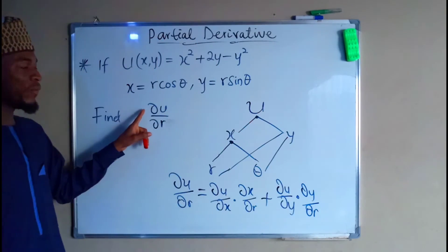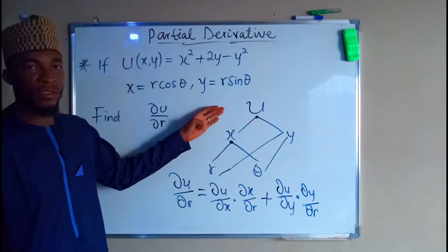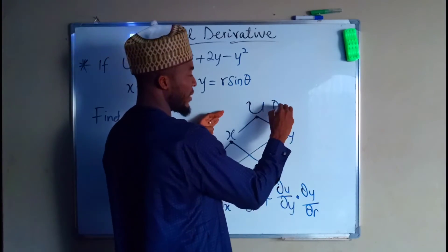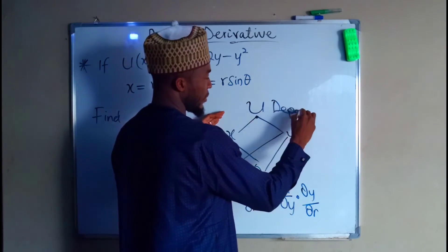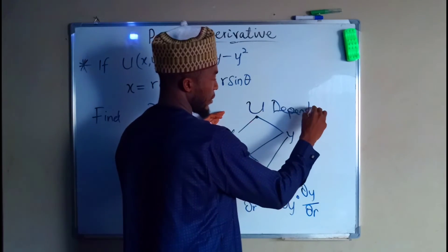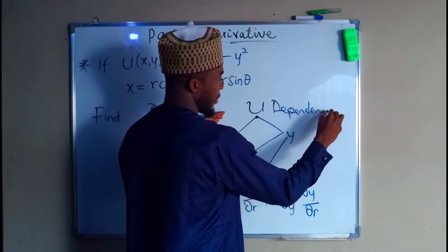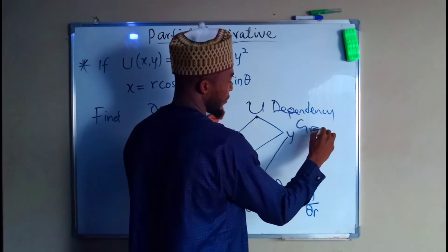By applying this formula we'll be able to find the derivative of u with respect to r. This is the dependency graph.